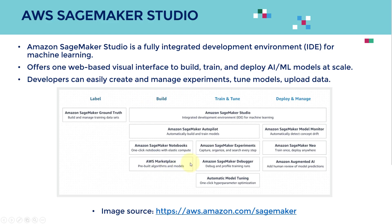So if you want to build the model, if you want to train and tune the model, if you want to deploy and manage the model, you would be able to do everything in just one browser, which is pretty fascinating. So Amazon SageMaker Studio is again an integrated development environment, or IDE, for machine learning.